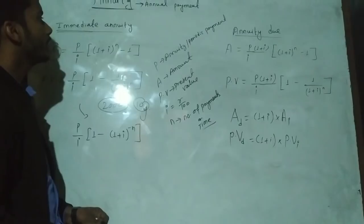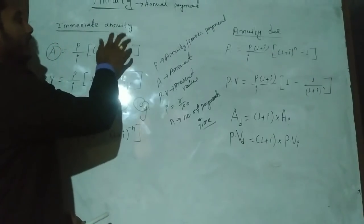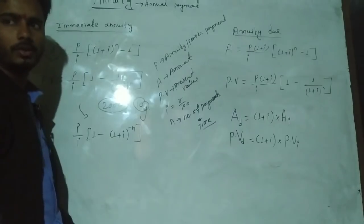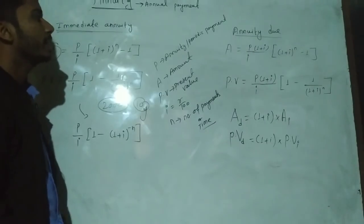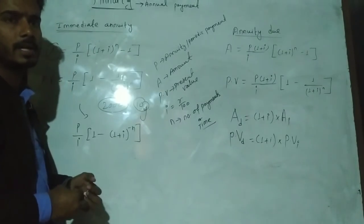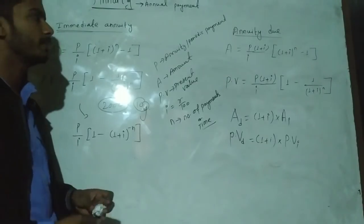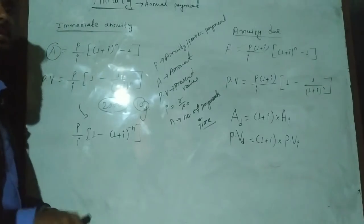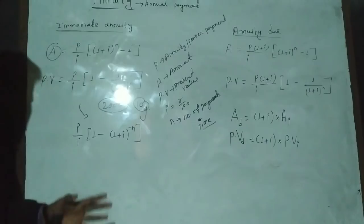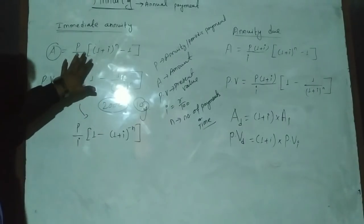Now we have to use log tables — log of (1 plus i) to the power N. Calculate using the log table. Match the answer with the book; otherwise if you calculate differently, there will be errors.